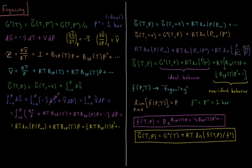We've defined our compressibility factor for gases: Z is equal to P times V-bar over RT. For ideal gases, PV-bar equals RT, so Z equals 1. For non-ideal gases, we expand Z as a Taylor series in pressure using virial coefficients — the second virial coefficient B2P times pressure, plus the third virial coefficient B3P times pressure squared, and so on.